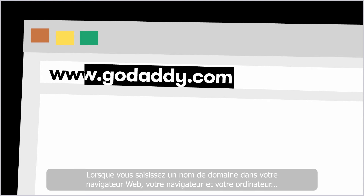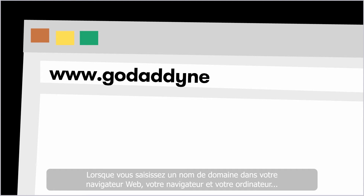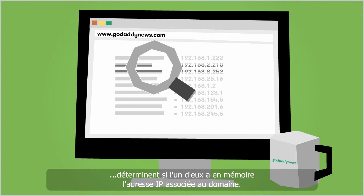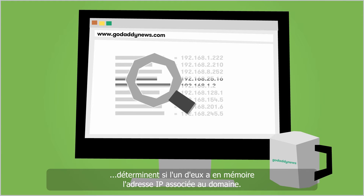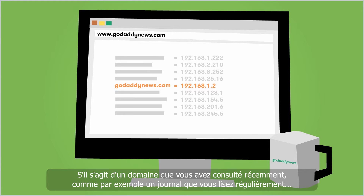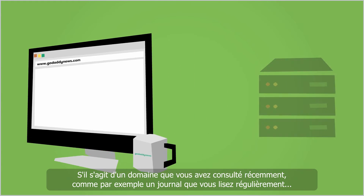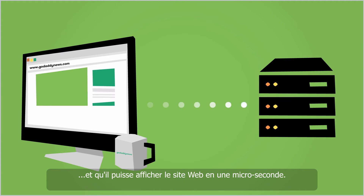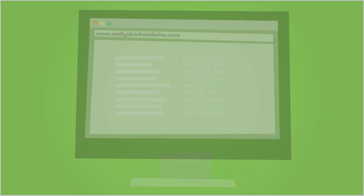When you type a domain name into your web browser, your browser and computer determine if one of them already has the domain's related IP address in their memory. If it's a domain that you've recently visited — like, say, a newspaper you look at every day — your browser may have stored the domain name and IP address in its memory and can display the website in a split second.